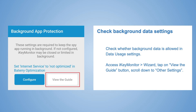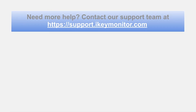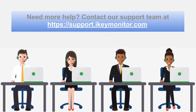You can also check whether the default background data settings have been changed. Get the phone in hand, dial the PIN to access iKey Monitor, go to Wizard, tap on 'View the Guide' button, and then scroll down to other settings. That covers all the solutions to the issue of no logs uploaded.